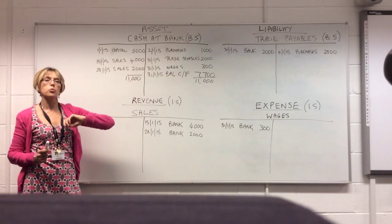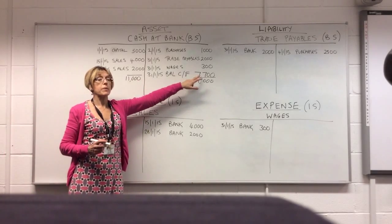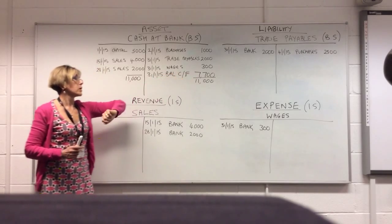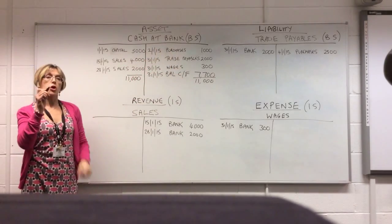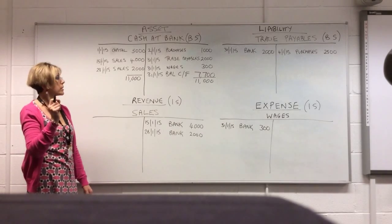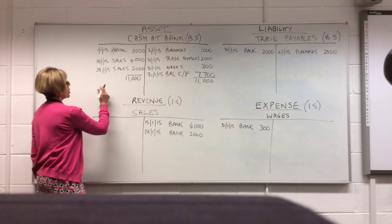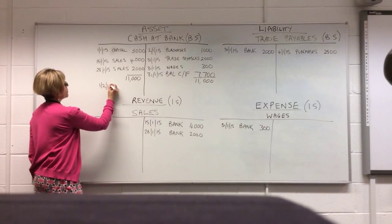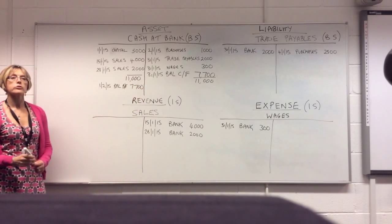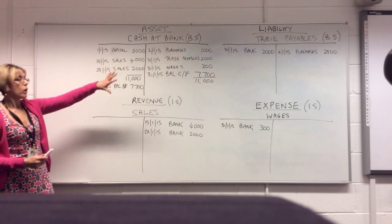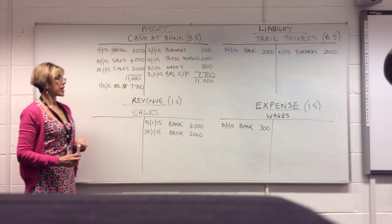We have to think about what this balance carried forward of 7,700 actually represents. We had 11,000 pounds coming in and only spent 3,300, so we've still got 7,700 pounds in the bank. We're carrying that balance forward from the end of January to the start of February. This represents a debit balance, although we write the entry on the credit side, because the debits were more than the credits. So we start February with 7,700 pounds — the balance brought forward on the debit side on the 1st of February.